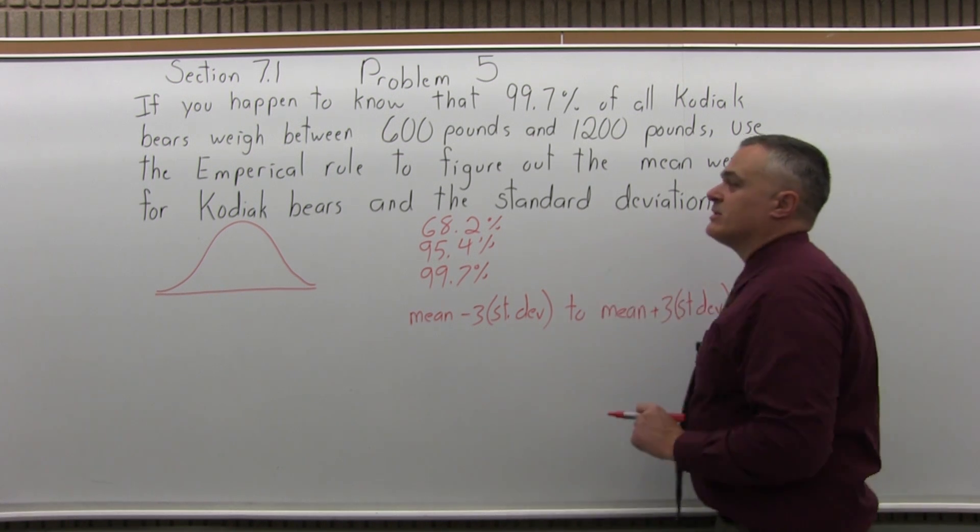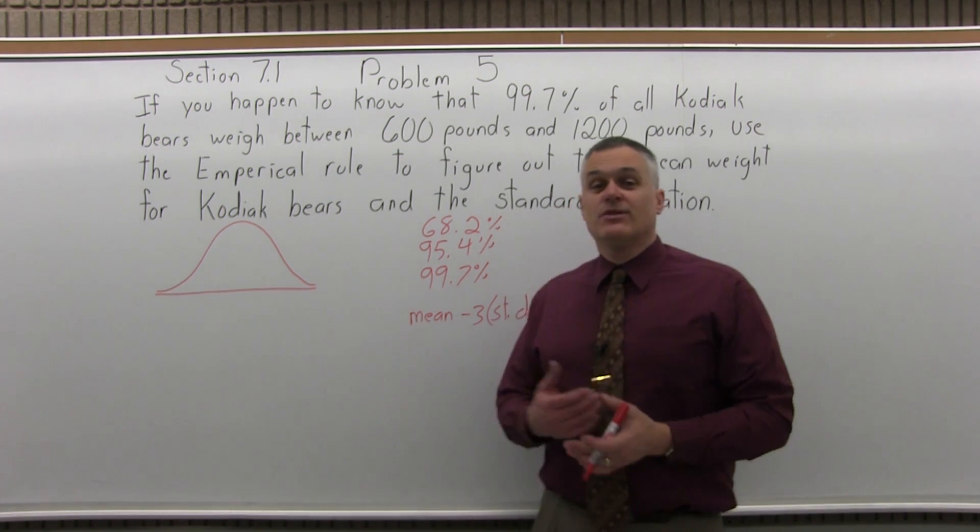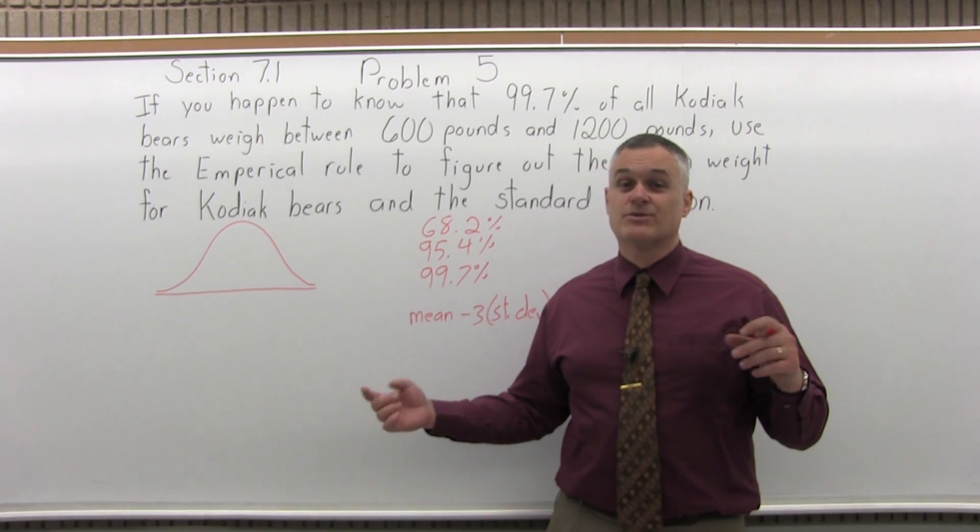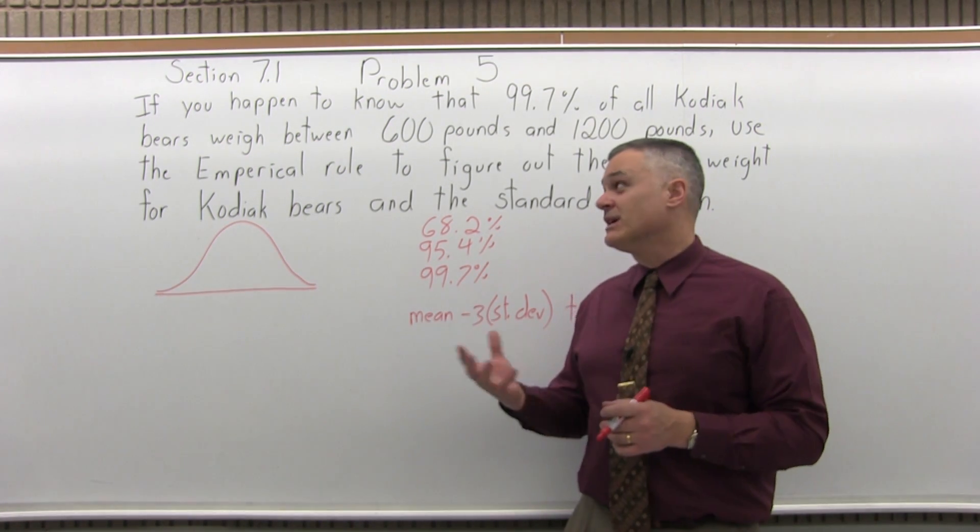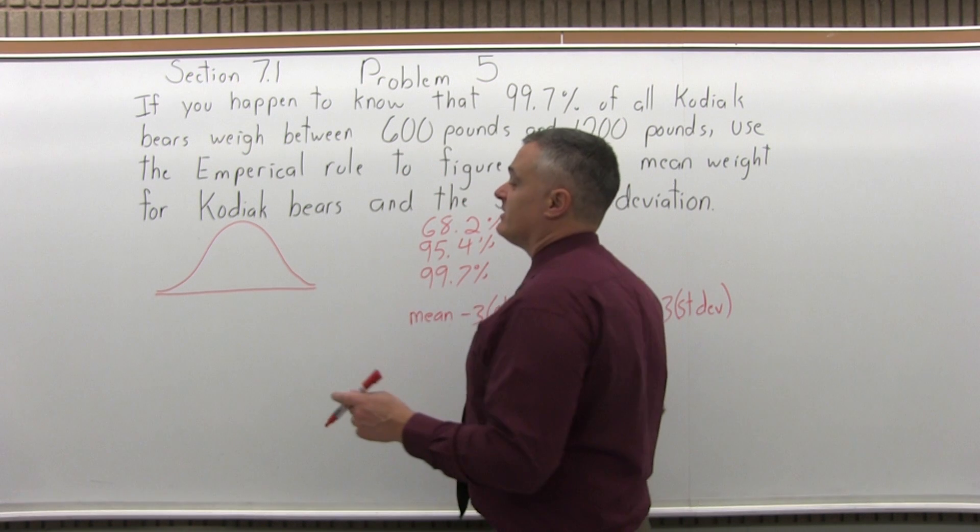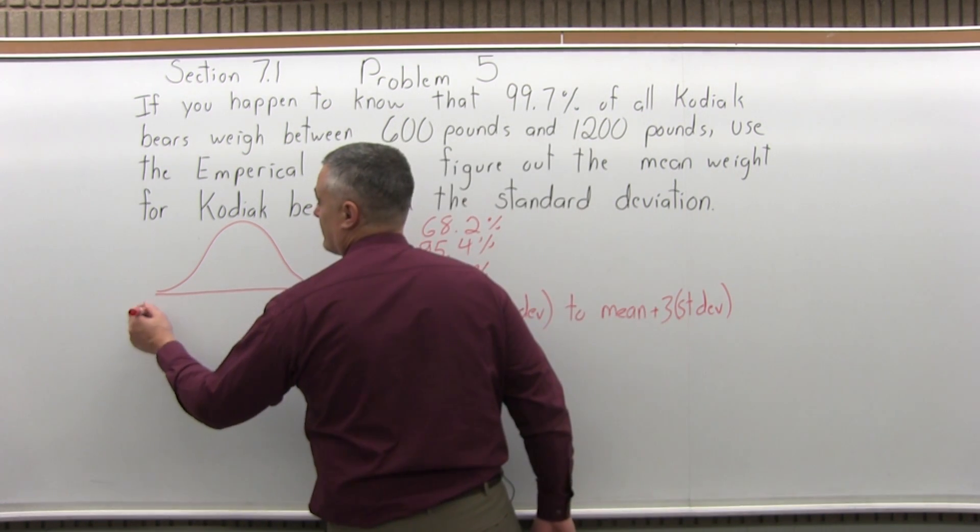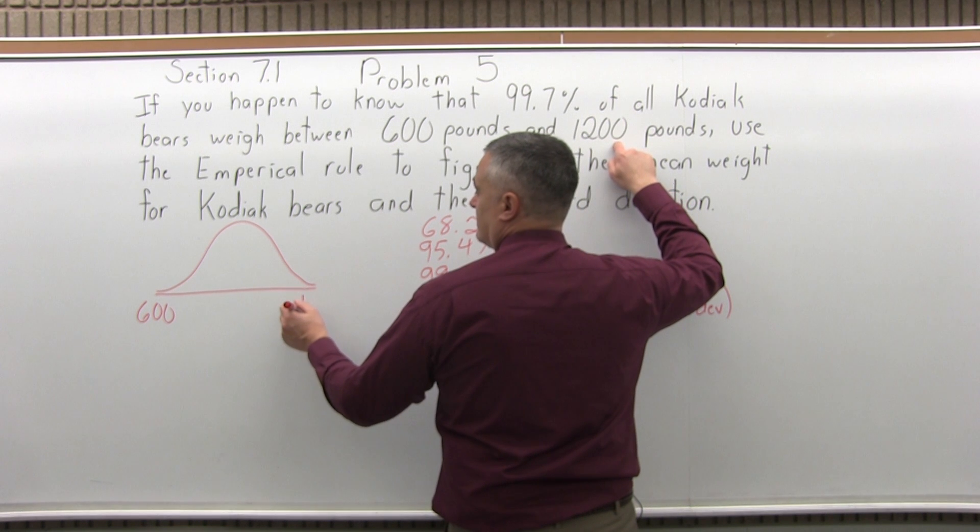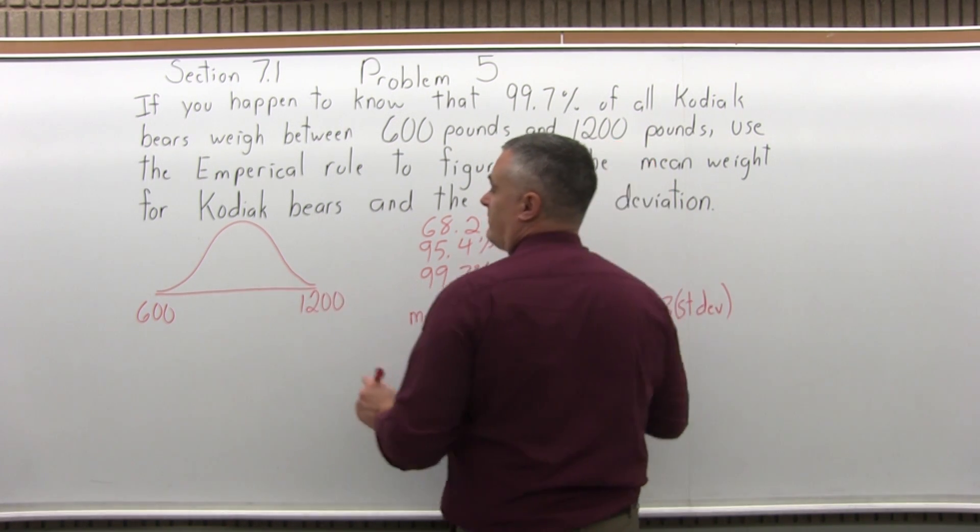That's what we're going to use. Usually they tell you the mean and the standard deviation and ask you to find the endpoints of the interval. This one goes the other way around. They've given you the endpoints of the interval. The small end of the interval is 600, and the large end is 1200.